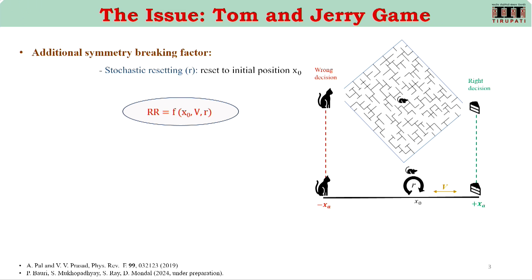On top of that, if we introduce some sort of resetting — that means Jerry was at some position, and we stochastically reset Jerry to a particular initial position, which need not necessarily be in the middle of that distance — then what will happen? Whether using this stochastic resetting we can amplify or optimize that reward ratio, or in other words the speed-accuracy trade-off. That is the issue here.